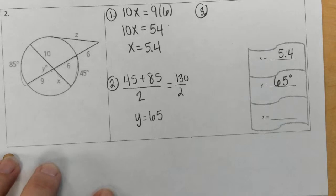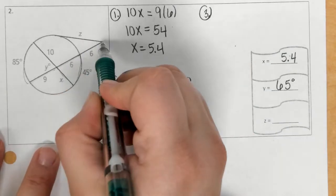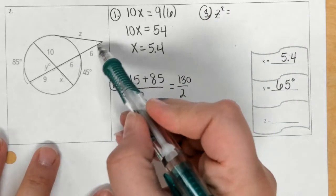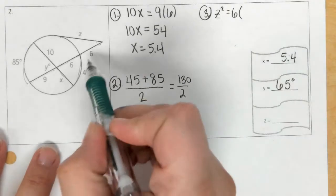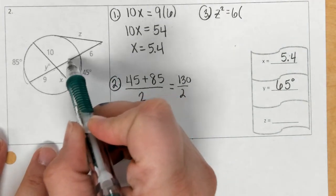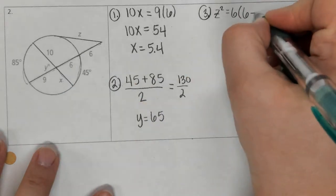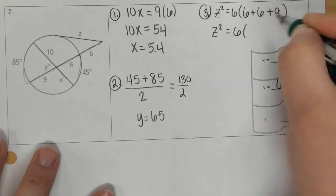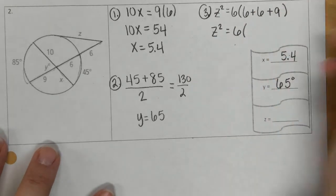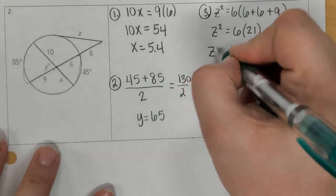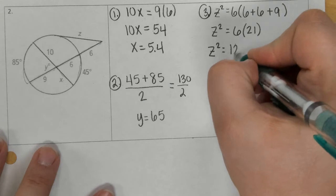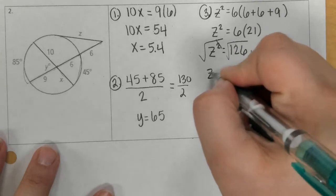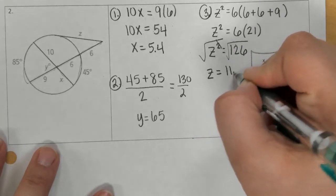Number 3, to find z, we do the outside piece times the whole length, so z times z is z squared. And then the outside part 6 times the sum of the entire length, so 6 plus 6 plus 9. If we add 6, 6, and 9, we get 21. If we multiply 6 times 21, I get 126. To get z by itself, I square root both sides and z equals 11.2.